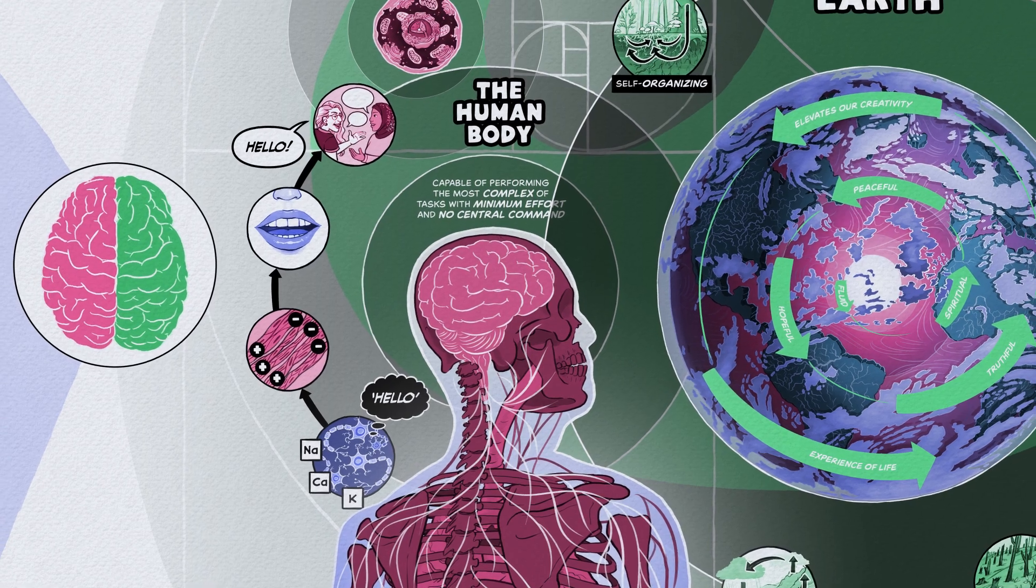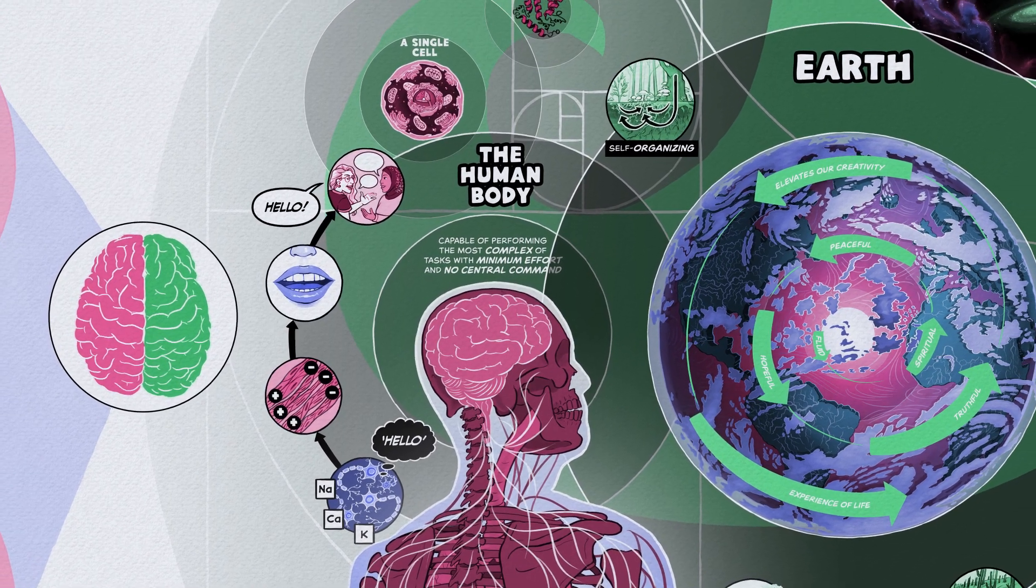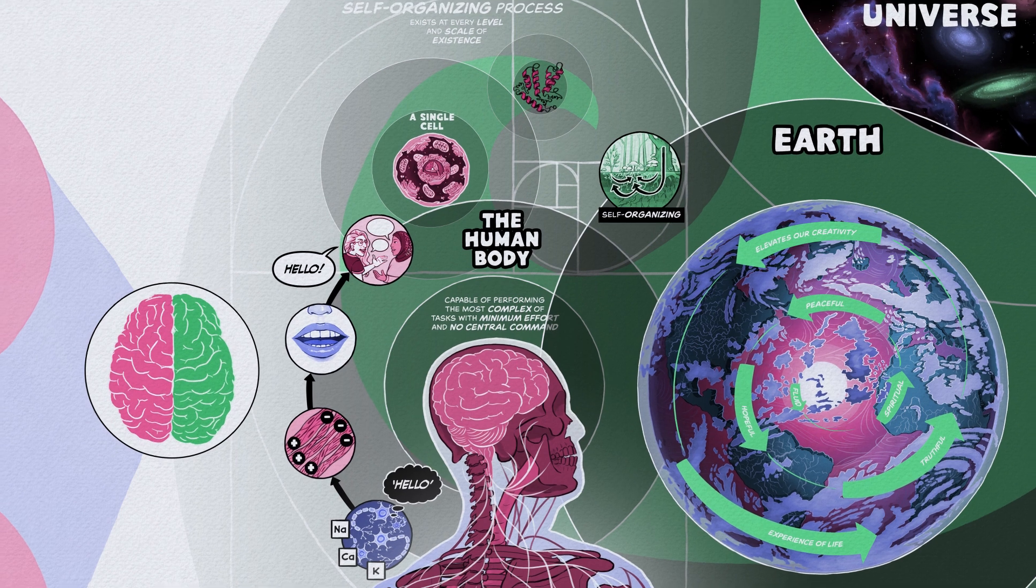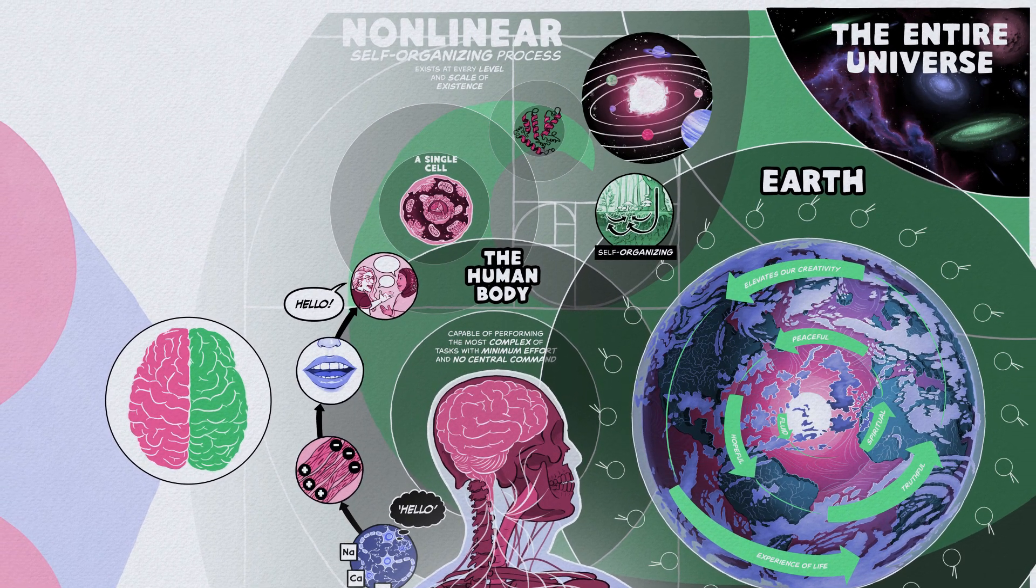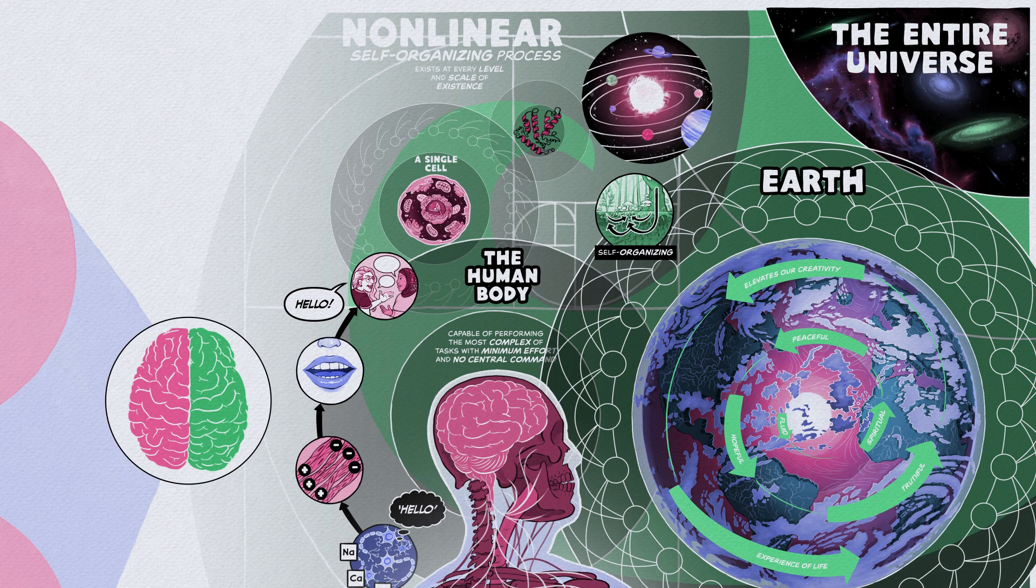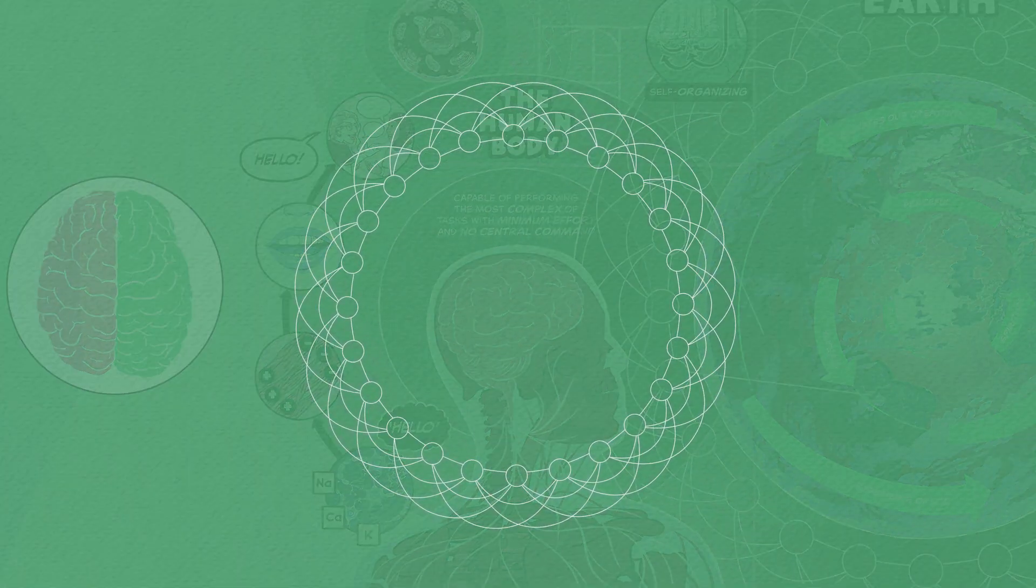We can observe the self-organizing process in ourselves, in other species, in the Earth itself, the solar system, and beyond. They all embody a universal inherent organizing pattern, the non-linear network.